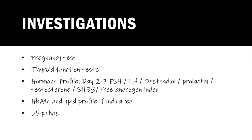Going over the investigations Amy received: a pregnancy test which was negative; thyroid function tests including TSH, T3, and T4; and a hormone profile on days 2–7 including FSH, LH, oestradiol, prolactin, testosterone, sex hormone binding globulin, and free androgen index — calculated as total testosterone divided by SHBG multiplied by 100. You note a free androgen index over 5 would potentially be indicative of PCOS. Amy also had an HbA1c, a lipid profile, and a pelvic ultrasound.